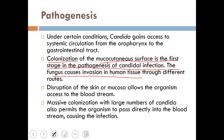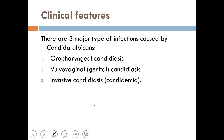The fungus causes invasion of human tissue through different routes. First, Candida albicans colonizes, then invades human tissue, disrupts cells, and enters the bloodstream. Additionally, from massive colonization, large numbers of Candida albicans yeast can be transferred directly into the human blood.